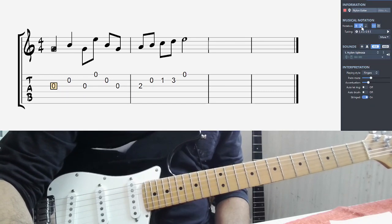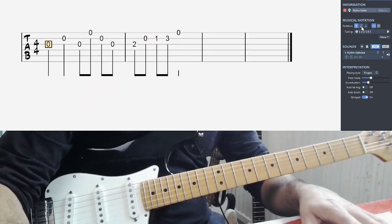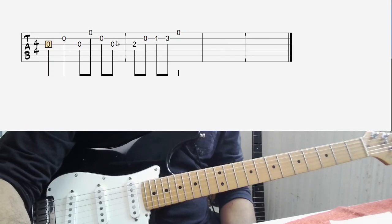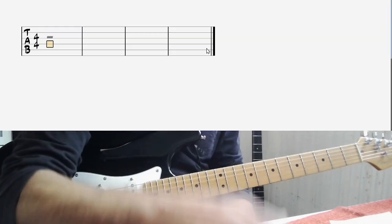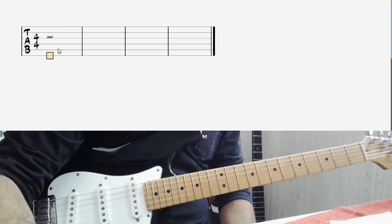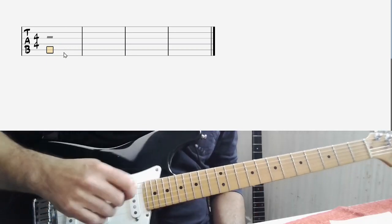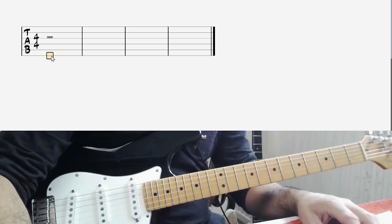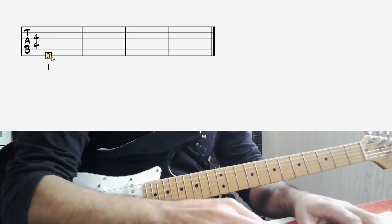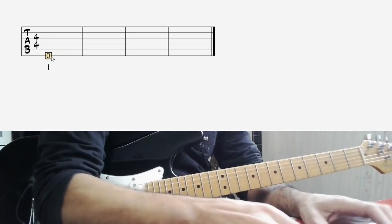So let me take away the standard notation. I'm just going to leave the tab there and talk about how it works. So what we've got is lines for strings and numbers for frets. That is what you must remember. Lines are strings. Actually, I'm going to even write this down: lines equals strings.